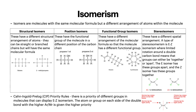The E isomer has these groups apart and the Z isomer has these groups together. For the Cahn–Ingold–Prelog (CIP) priority rules, the atom or group on each side of the double bond with the higher AR/MR is given higher priority. For example, a carbon double bond bonded to bromine, fluorine, hydrogen and chlorine — bromine has a higher atomic number than fluorine, so bromine has higher priority; chlorine has a higher atomic number than hydrogen, so chlorine has higher priority, making this a Z isomer.